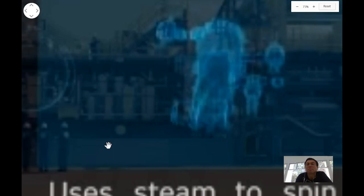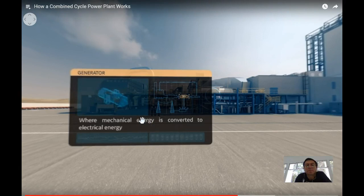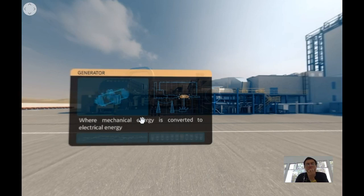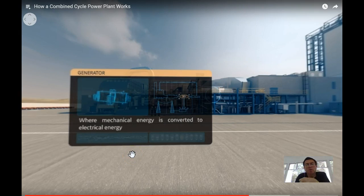Here we are at the generator. This is where the magic happens. The spinning of the gas and steam turbines drives the generator rotor to spin, converting mechanical energy into electrical energy. So that steam turbine that we just described is the Rankine cycle, right?